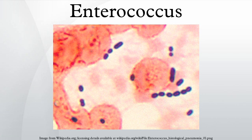Enterococci typically exhibit gamma-hemolysis on sheep's blood agar. History: members of the genus Enterococcus were classified as Group D Streptococcus until 1984, when genomic DNA analysis indicated a separate genus classification would be appropriate.